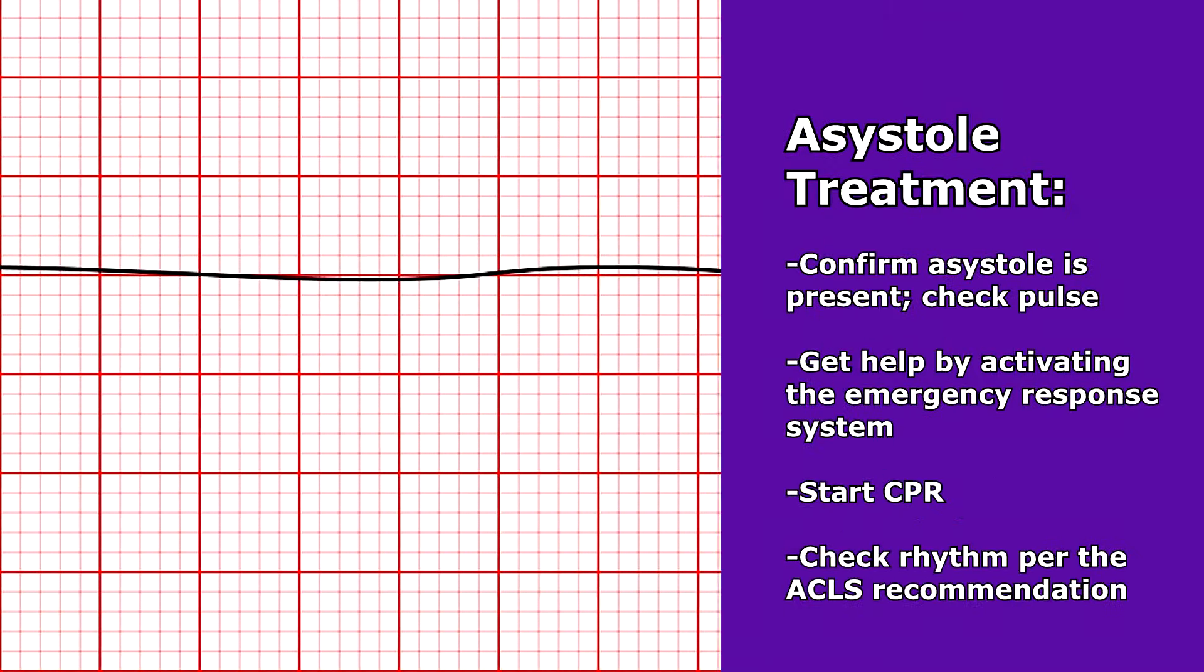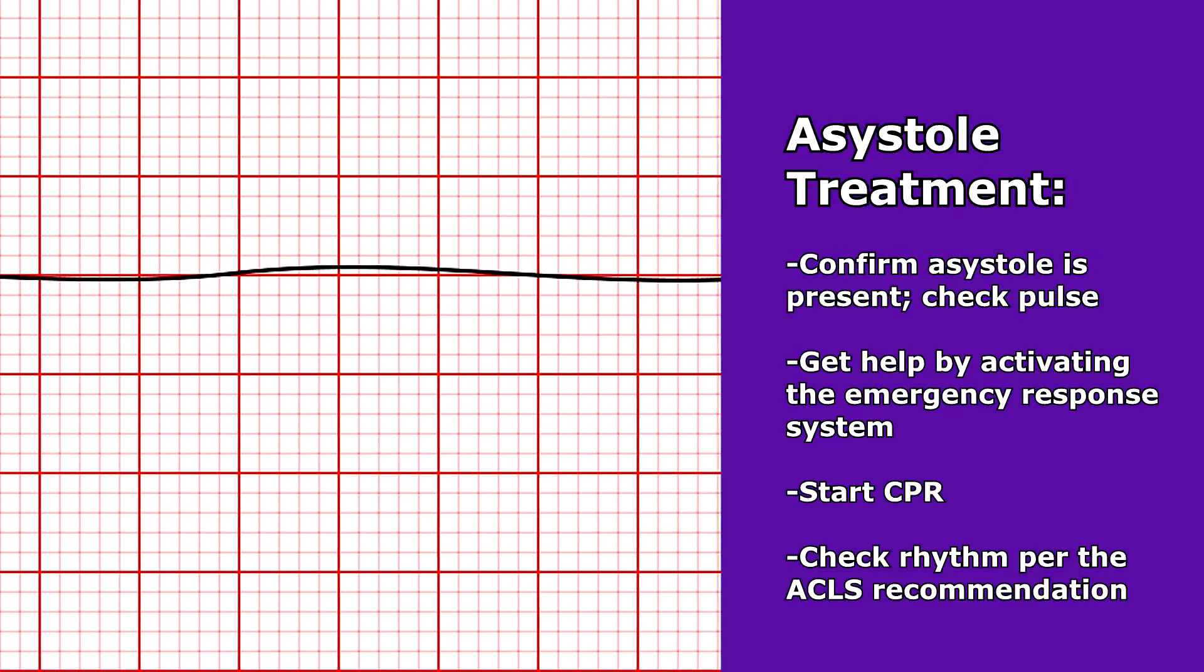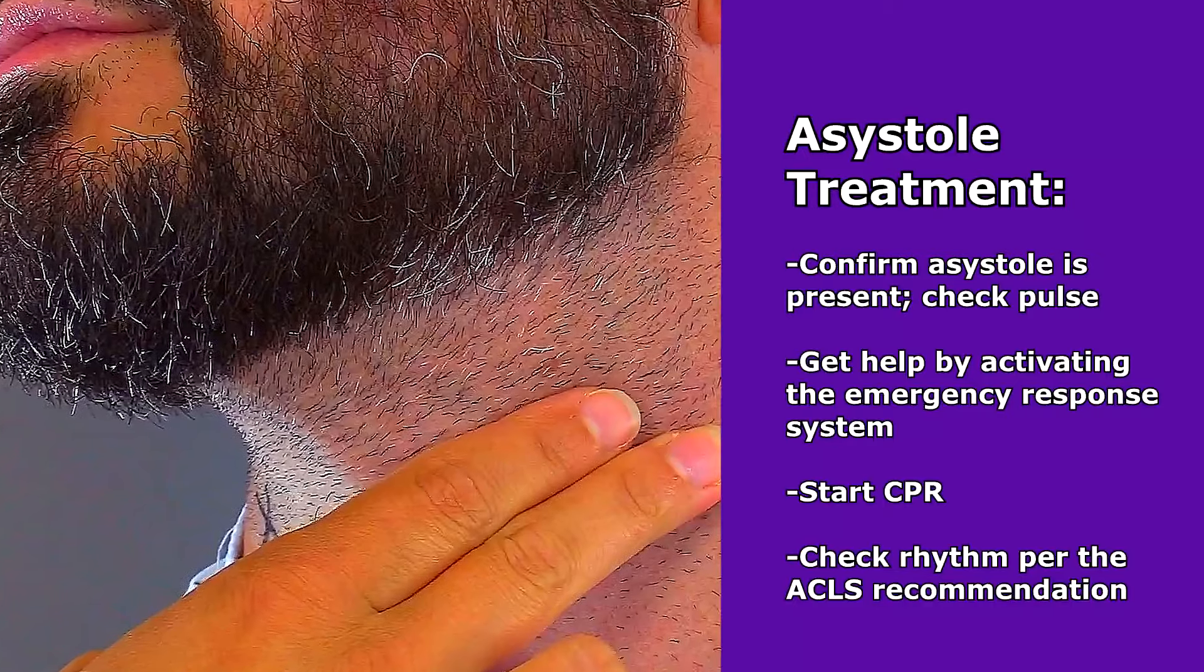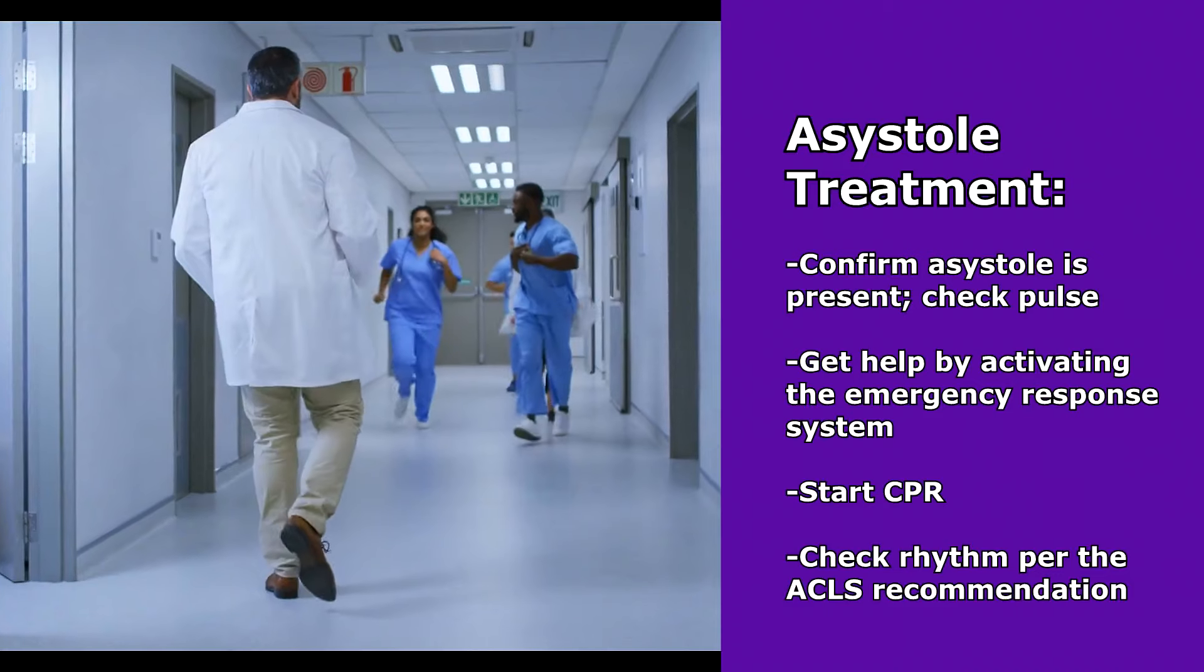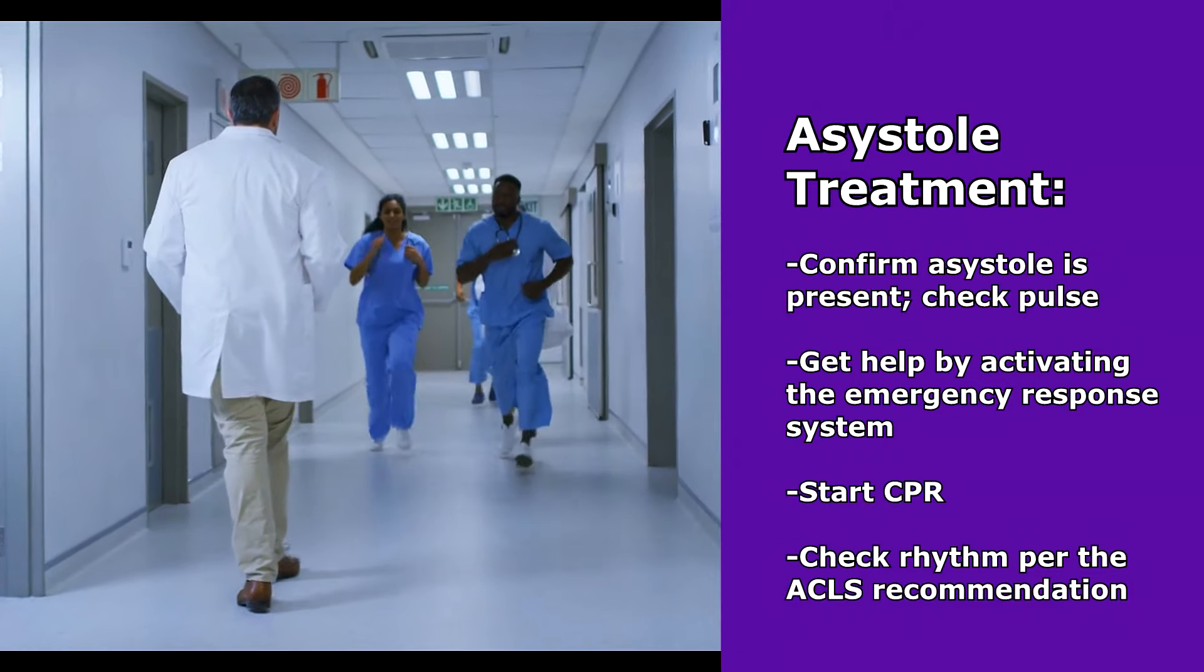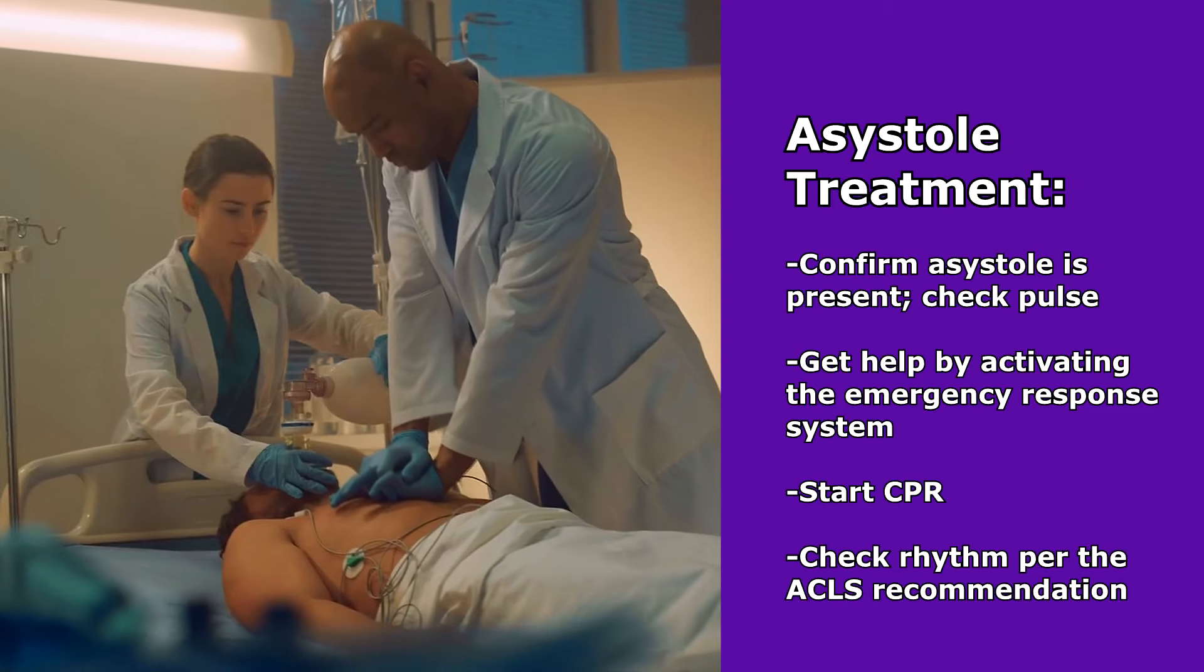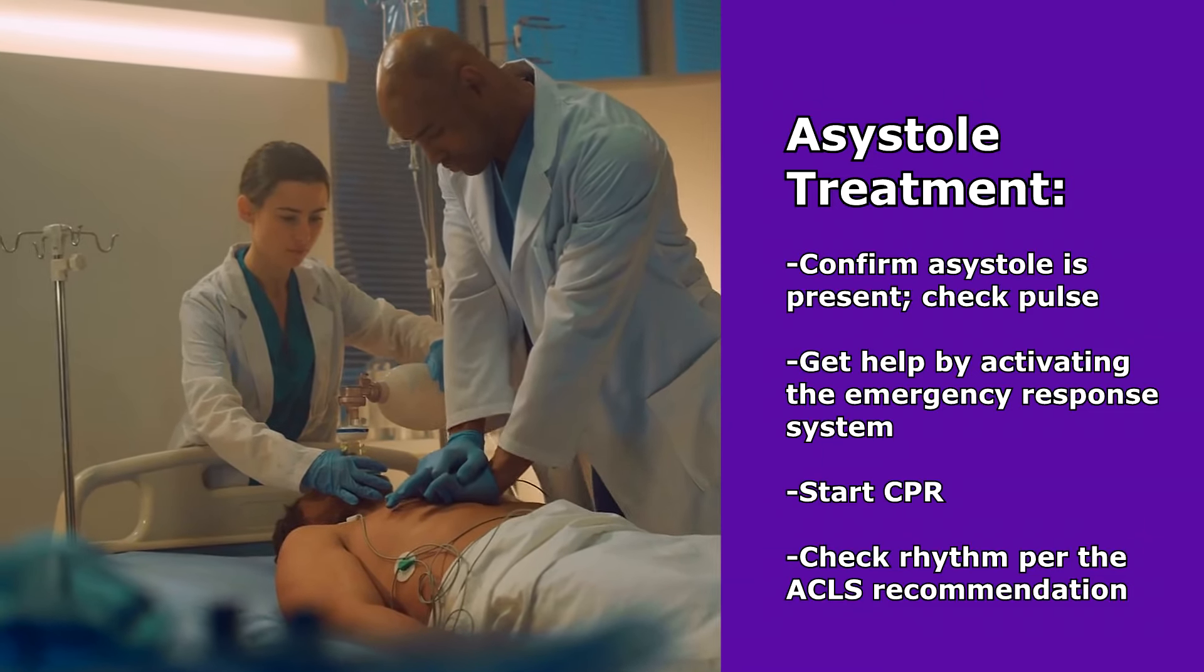What is the treatment for asystole? As a nurse, whenever you find your patient in this, you want to confirm that this is asystole - check that pulse. If you have no pulse, you want to immediately activate the emergency response system. If this is calling code blue, do that, call 911, whatever steps you need to take. Then you want to start CPR immediately.